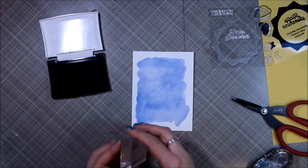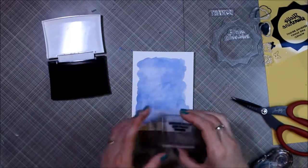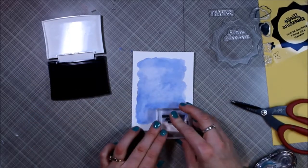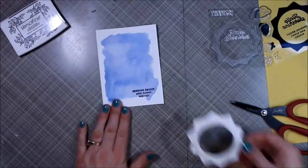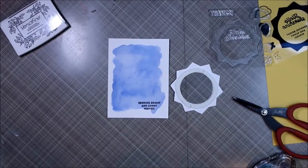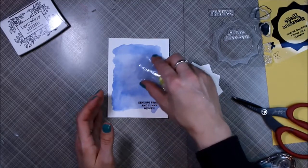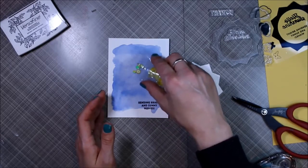After my blue watercolor piece had dried, I'm stamping the sentiment from the set: Sending Bright and Sunny Wishes. Then I'm adding my little sequins. This is a sequin mix I got from Simon Says Stamp. There's a little more than just sequins in there, which I think is really cool.